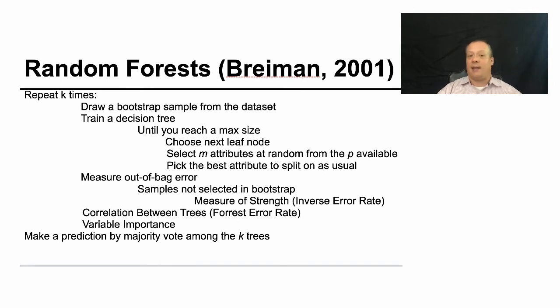You repeat k times. k is usually pretty large, like 1,000 or 10,000 or something like that. You draw a bootstrap sample from the data set. In other words, from your training data, you pick some examples. You don't pick all of them, but you pick, say, 50% or 30% of them. You then train a decision tree just on those examples until you reach some max size. And you keep splitting on these attributes.